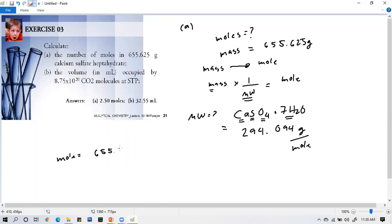Let me calculate for a moment. This will yield 294.094 grams per mole. Wait, my mistake - this is not 294 but rather 262.114 grams per mole. Therefore, moles equals mass, 655.625 grams, over 262.114 grams per mole. The mole goes to the numerator, grams cancel, and the answer is 2.5 moles.